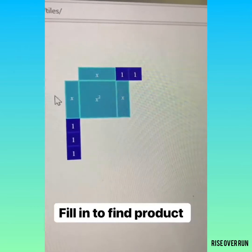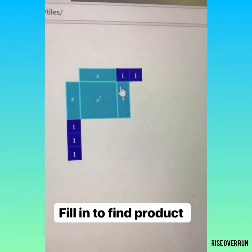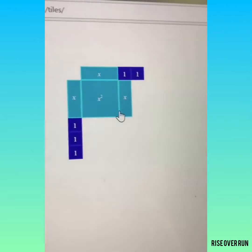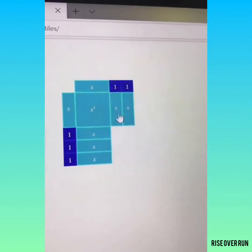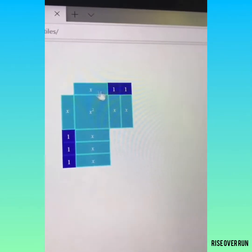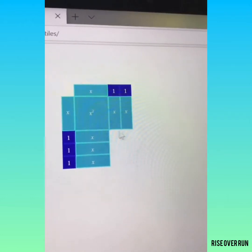Notice here that 1 times x, that gives us a rectangle with a width of 1 and a length of x. So I continue filling this in, matching up this length and this width. Over here, I fill in with unit tiles.